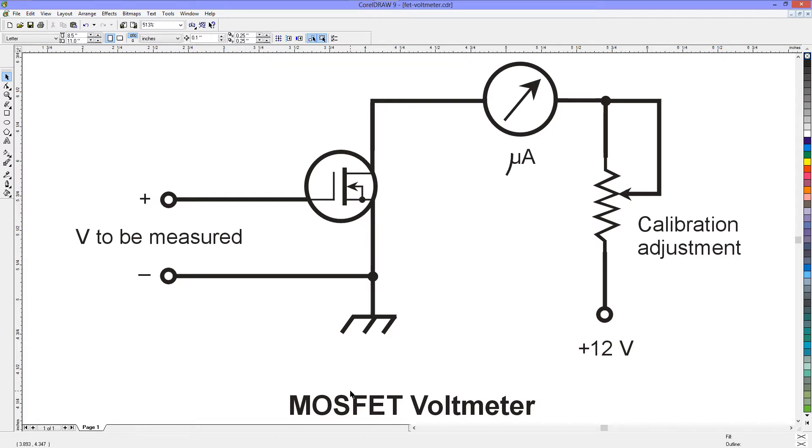In this particular case, it is an N-channel MOSFET. Now the fact that this is a metal oxide semiconductor device means that the input impedance here at the junction between the source and the gate is essentially infinite.